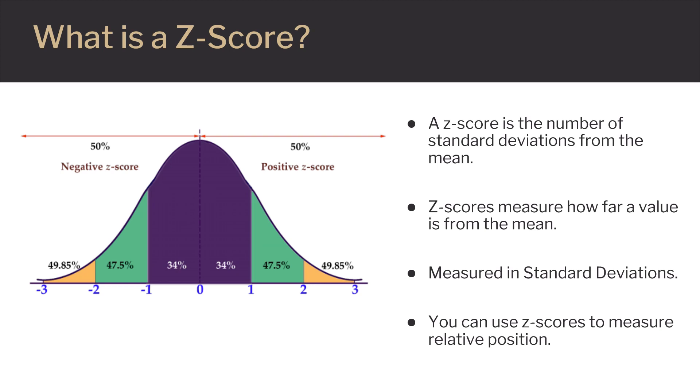With the diagram, you can see that negative Z-Scores happen when the data value is below the mean, or zero. Positive Z-Scores happen when the data value is above the mean, or above the zero.